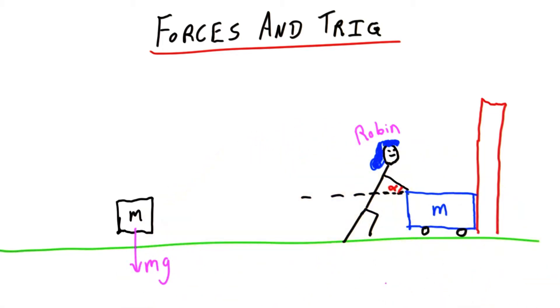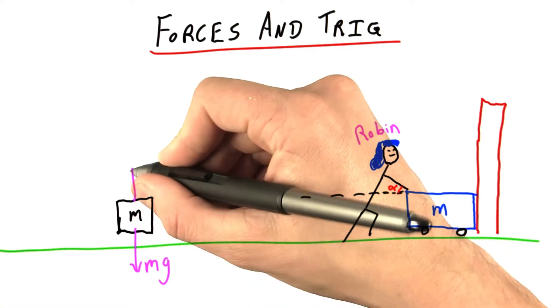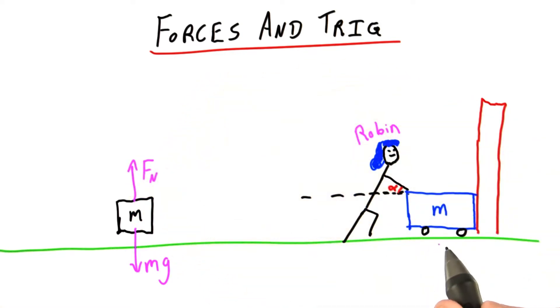Of course, as always, we have the cart's weight pointing downwards. And notice I didn't even tell you what m was. We don't even care. We have some normal force pointing upwards. We know because the car isn't falling to the ground.